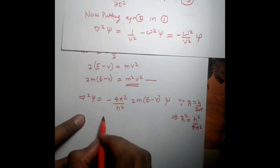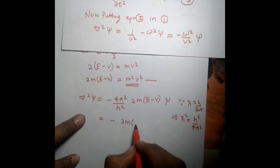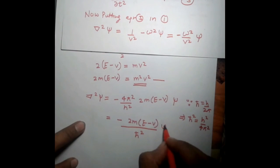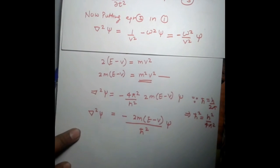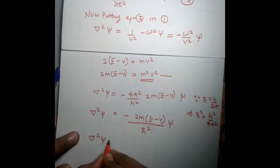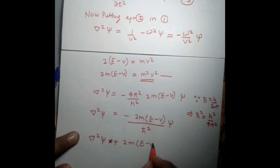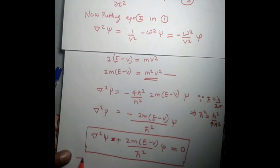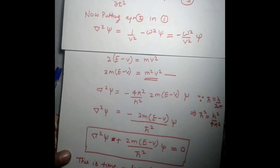Replacing 4π²/h² with 1/ħ², the equation becomes: ∇²ψ = −(2m(E − V)/ħ²)ψ. Transferring to the left-hand side: ∇²ψ + (2m(E − V)/ħ²)ψ = 0. This is the time-independent Schrödinger wave equation.